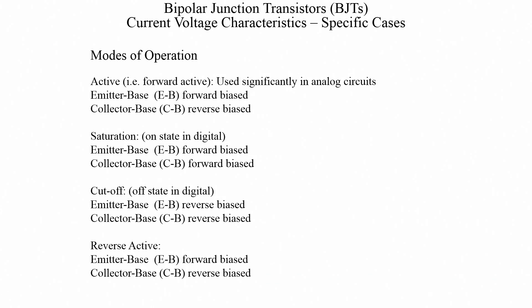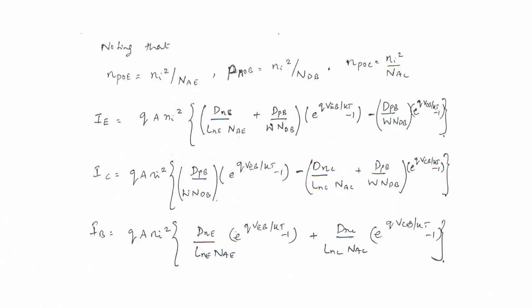So far we have seen the general IV characteristics for the BJT. We have not made any specific assumptions on whether it is active mode, saturation mode, or cutoff mode, but we managed to derive the very general expressions for the current-voltage characteristics of the BJT. We did this by simply solving the continuity equation and identifying the diffusion currents. Now we can take these very general equations and make them more specific.